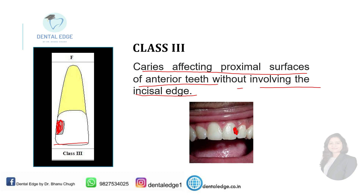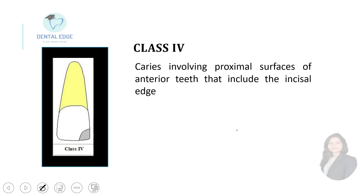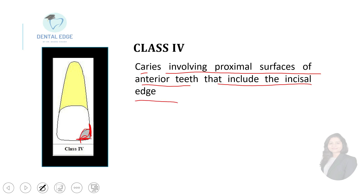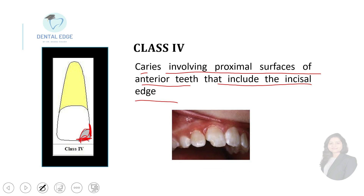Let's see what is class four. Class four is caries involving the proximal surface of anterior teeth that includes the incisal edge. So a caries on the proximal surface that includes the incisal edge — this is a class four.